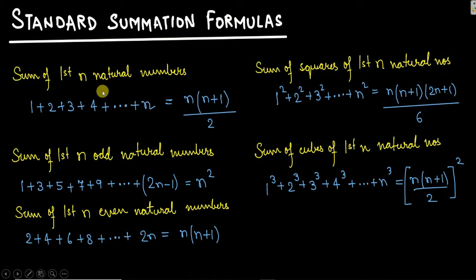Sum of first n natural numbers. You know what are natural numbers. Natural numbers are 1, 2, 3, 4 and so on. So let us consider we have some n natural numbers and we are interested to find the sum of first n natural numbers. The formula that you'll get is n into n plus 1 upon 2.